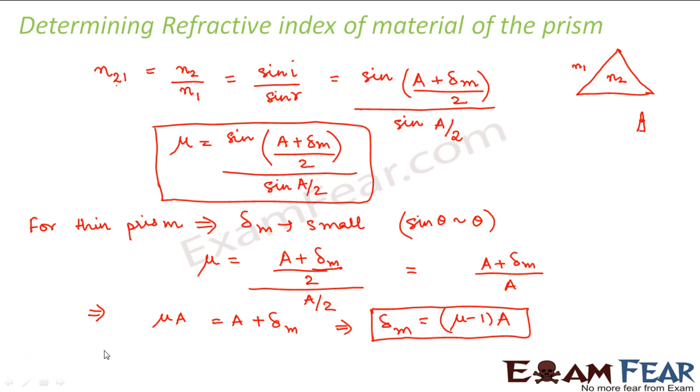So for thin prisms, we see that delta m is directly proportional to the angle of prism for thin prisms. That means as the angle of prism increases, delta m increases. As the angle of prism decreases, delta m also decreases.